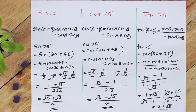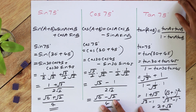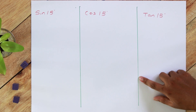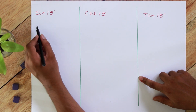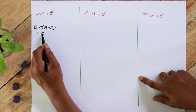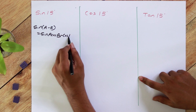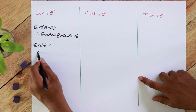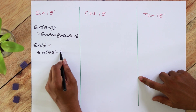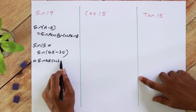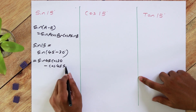Moving on to the other three — the difference identities. We are going to find the values of sin 15, cos 15, and tan 15. To find sin 15, we use the difference identity from the previous video: sin(A minus B) which we can write as sin A cos B minus cos A sin B. We can write sin 15 as sin(45 degrees minus 30 degrees), which is in the form of sin(A minus B).